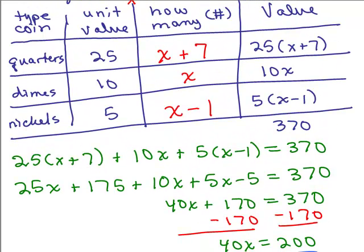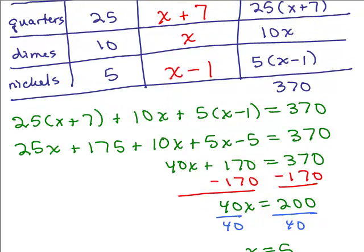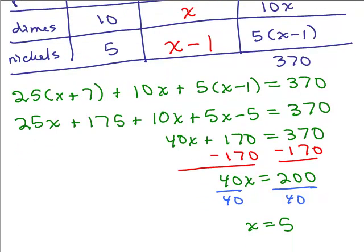So now we're going to go over here on the side and notice, if X was 5, right? So I should have 5 dimes, right? 5 dimes. All right. What else?